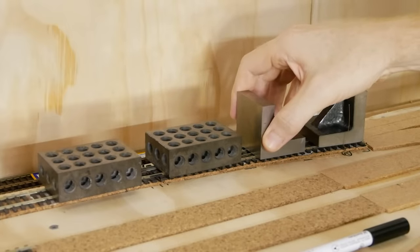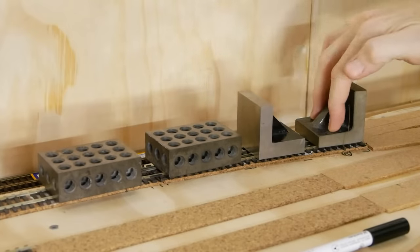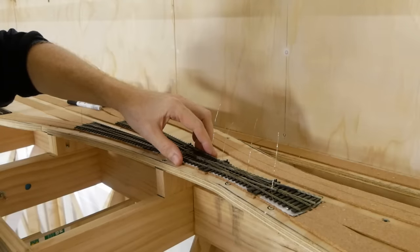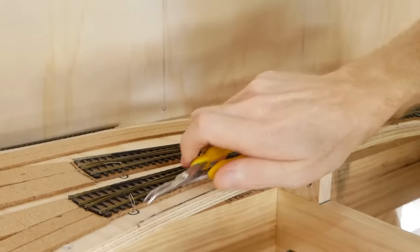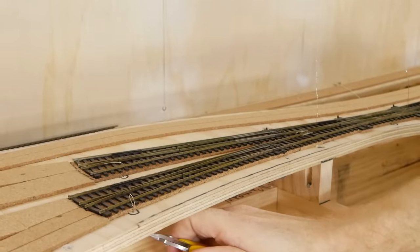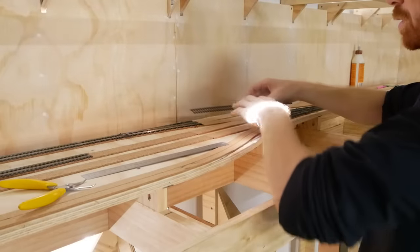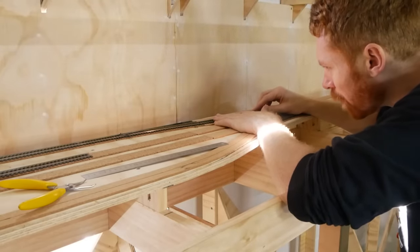Once satisfied, the turnout is weighed down as the glue dries. Then one by one the rest of the turnouts are applied and glued down onto the layout. The frog wires hopefully line up so they can be poked down through the plywood ready to be wired up later.